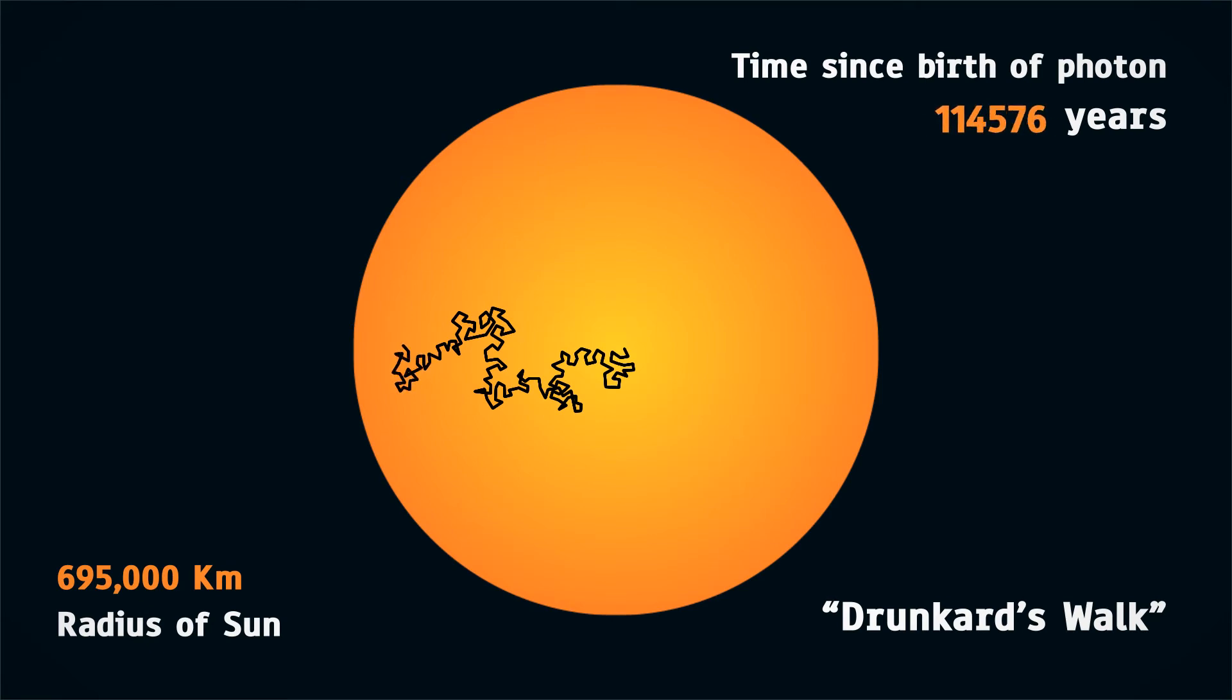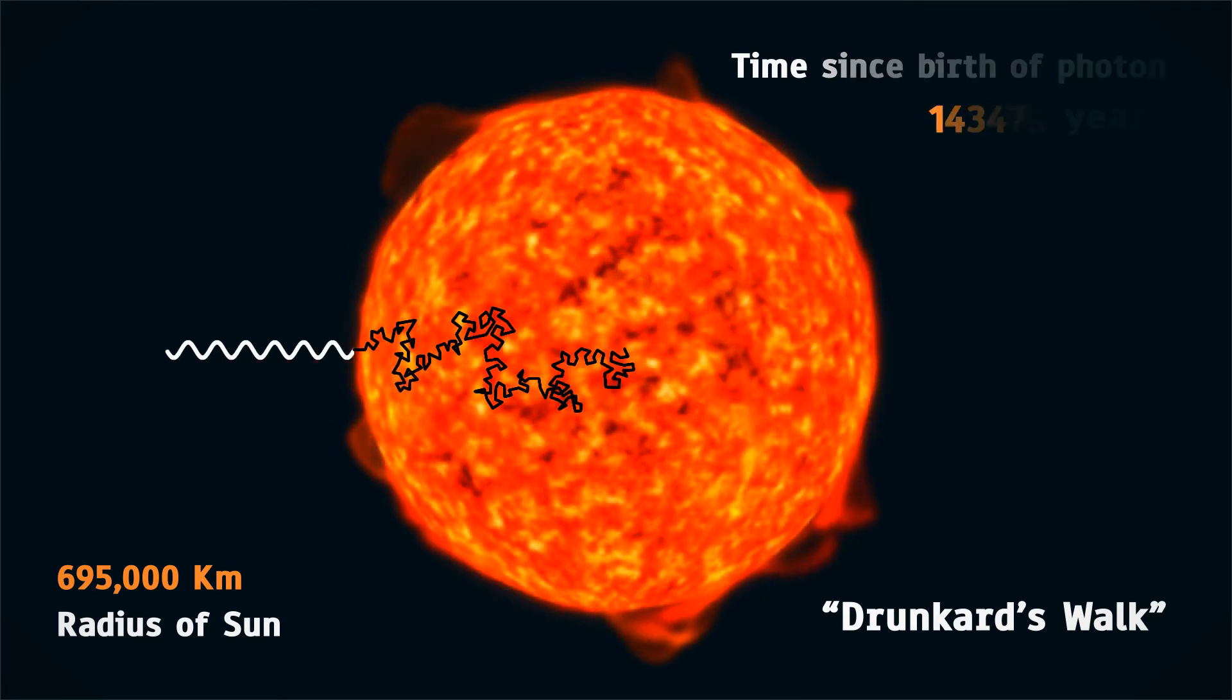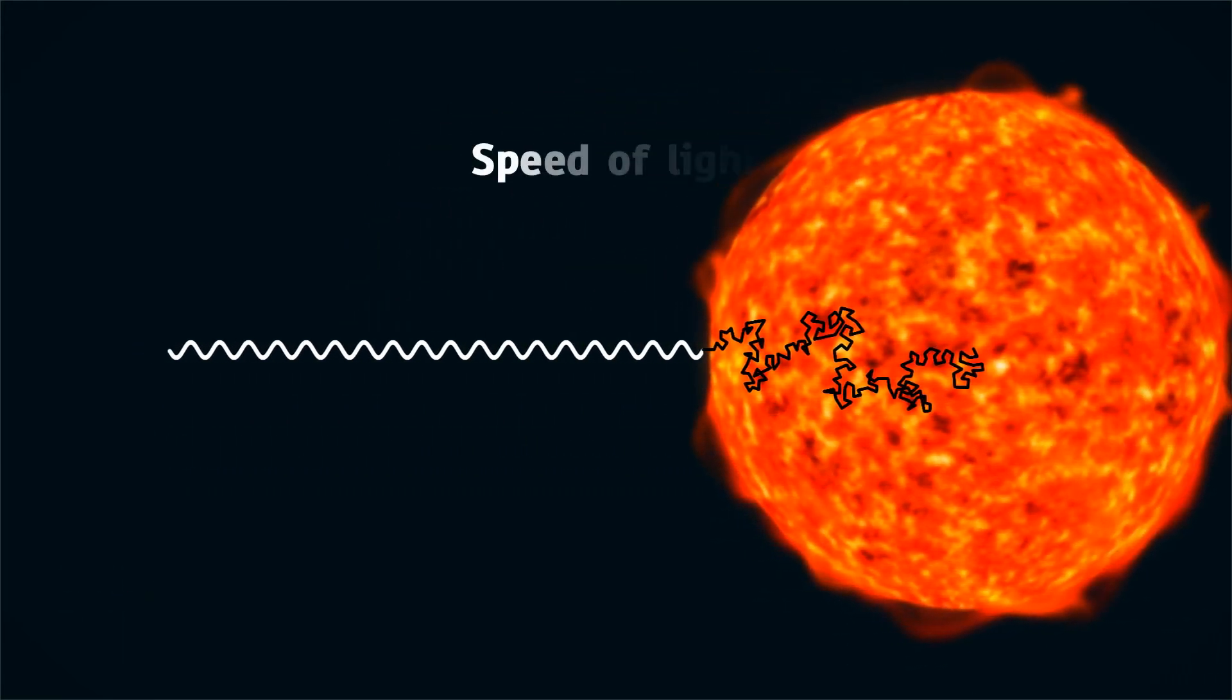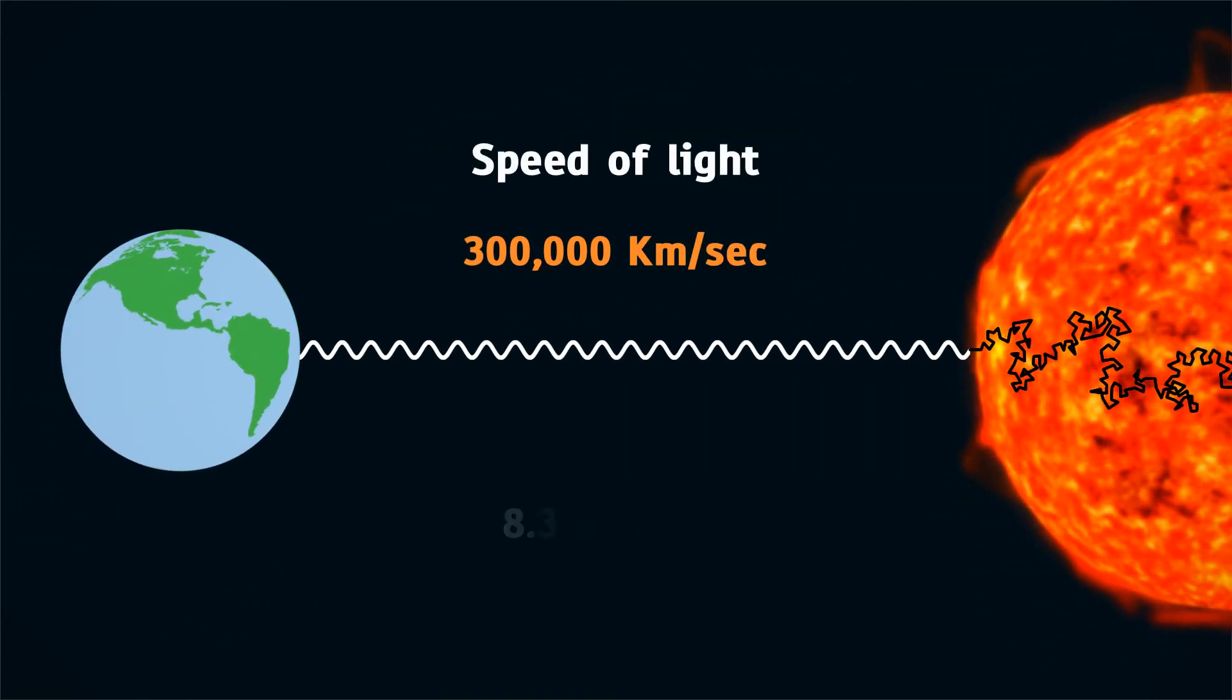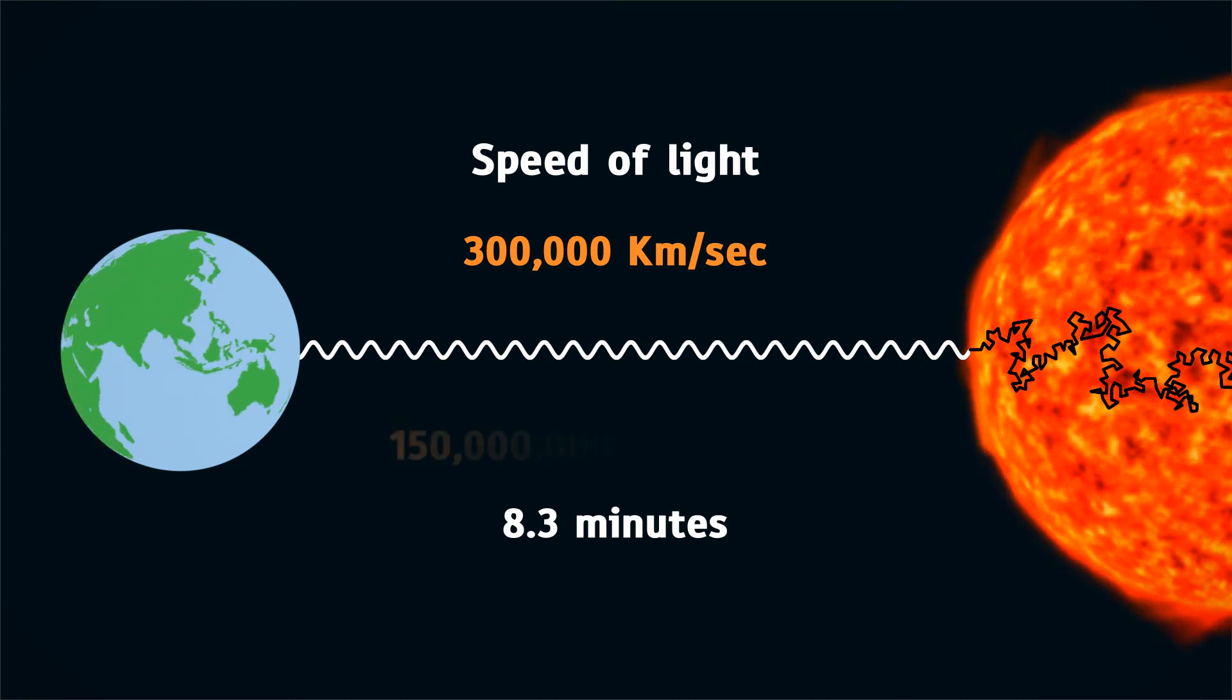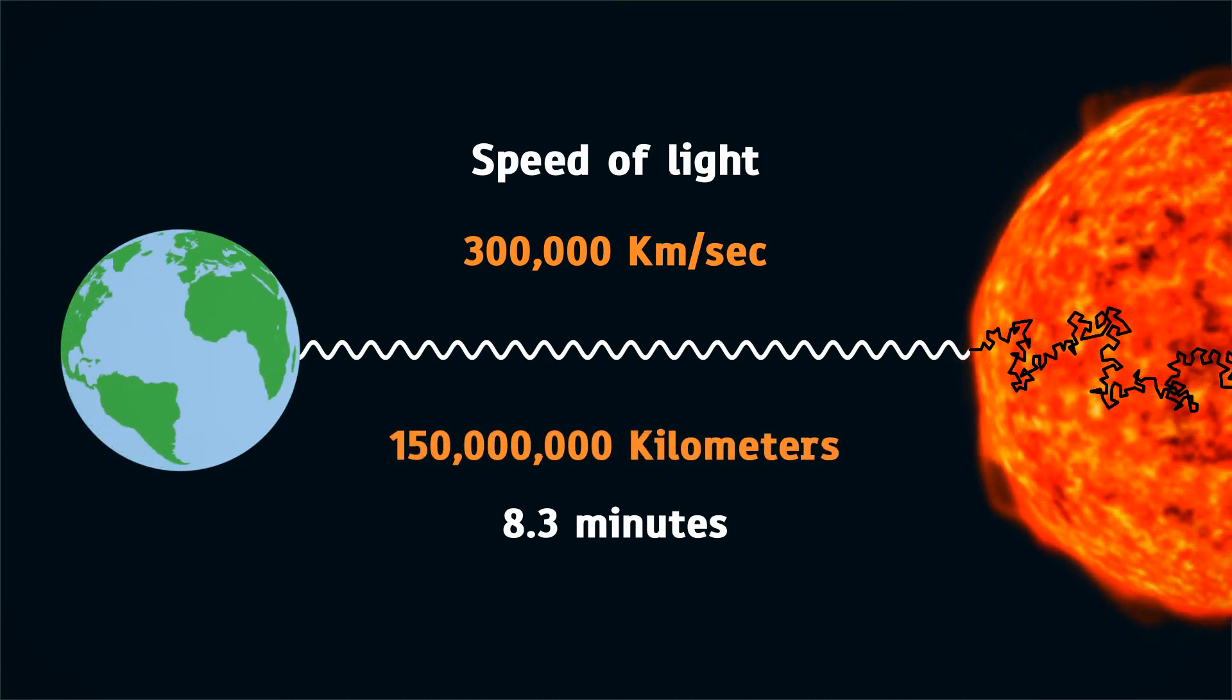Once they reach the surface of the sun with nothing to stop them, these photons hurl through space at the speed of light. It takes just about 8.3 minutes for them to travel 150 million kilometers to reach Earth.